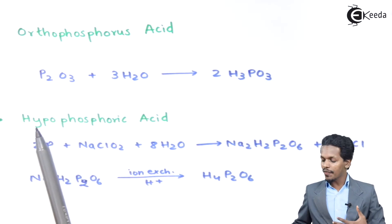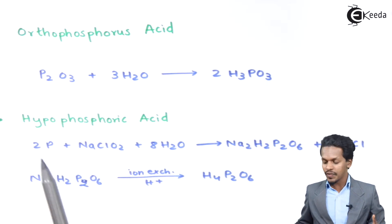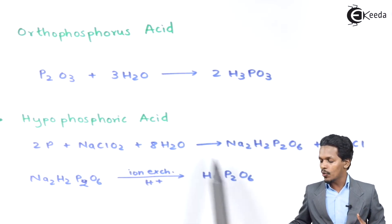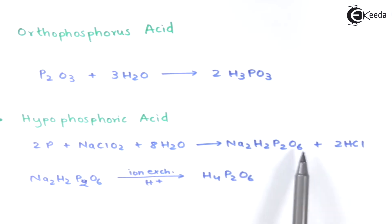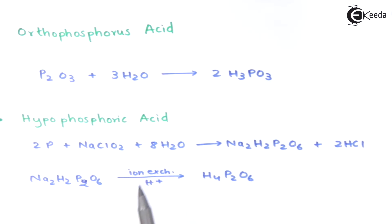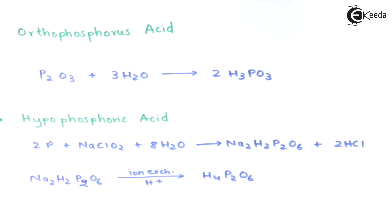The next one is the preparation of Hypophosphoric Acid. Here we take 2 moles of Phosphorus and react it with NaClO₂ along with water, giving Na₂H₂P₂O₆ along with 2 moles of HCl. The Na₂H₂P₂O₆ is then passed through an ion exchanger where Na is replaced by hydrogen atoms, giving H₄P₂O₆, which is known as Hypophosphoric Acid.